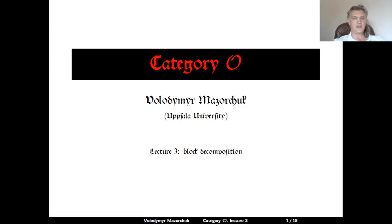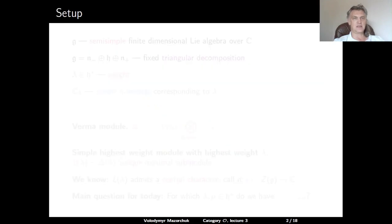Category O, Lecture 3: Block Decomposition. Let's start from our setup. We consider G a semi-simple, finite-dimensional, complex Lie algebra.